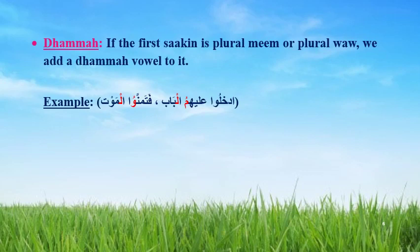The dhamma vowel: if the first sakin is part of a plural name or plural verb, we add a dhamma vowel to it. For example, this is a sakin — the first sakin. The second sakin is the lam of the next word. So we add dhamma to the first sakin. Similarly with another example: the first sakin followed by lam — so we say it with dhamma. We add dhamma when the first sakin is a plural name or plural verb.